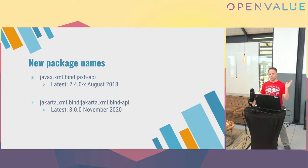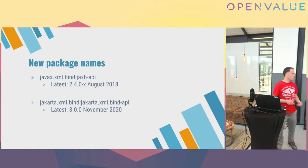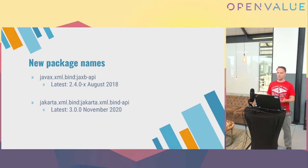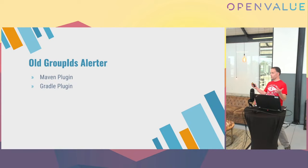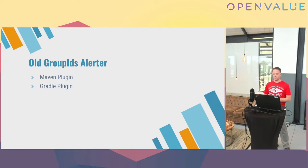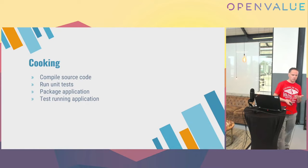An example of package names changing: probably you all know Java EE, which is now called Jakarta EE. It's no longer part of Oracle — they changed the name — so it's no longer 'javax' but now 'jakarta'. If you simply upgrade to the latest version of the JAXB API, you'd be stuck on a version from 2018. You need to check if there are new packages available with the same functionality. There is a Maven and Gradle plugin that has a blacklist of all names no longer being maintained and their replacements, so you can run it in your build to get notifications.